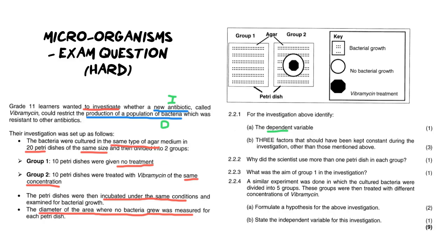The next question says three factors that should have been kept constant during this investigation other than those mentioned. Now remember what we are looking for here is our fixed variables. Now do you see all the ones that are highlighted in red earlier in the paragraph? You can't list any of those. So that means you have to think of others that you want to list of factors that you should have kept constant. So you can't write same size petri dish, same type of agar, same concentration of antibiotic. Those are already given. You have to mention others.